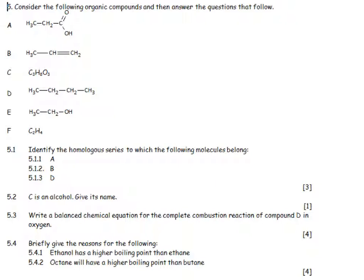Consider the following organic compounds and answer the questions that follow. We've got a carboxylic acid, that's an alkene. We could have an ester or a carboxylic acid here, we've got an alkane, here we've got an alcohol, and there we've got an alkene. Identify the homologous series of the following molecules. A is going to be a carboxylic acid, B is the alkenes, and D is an alkane.